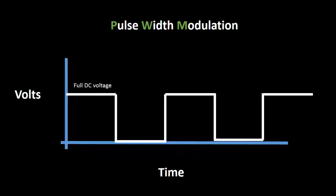If we were to switch a DC voltage on and off at even intervals over and over again, the average voltage would work out to be half of the input DC voltage.